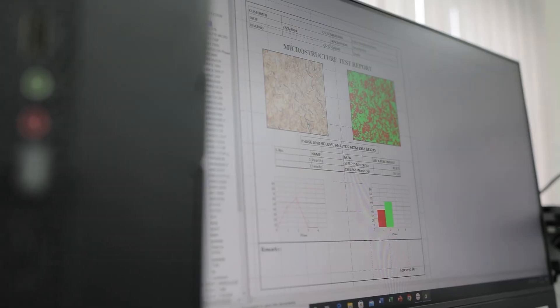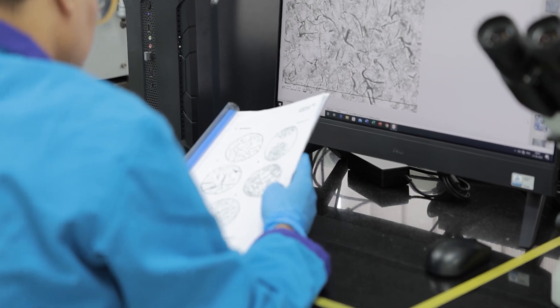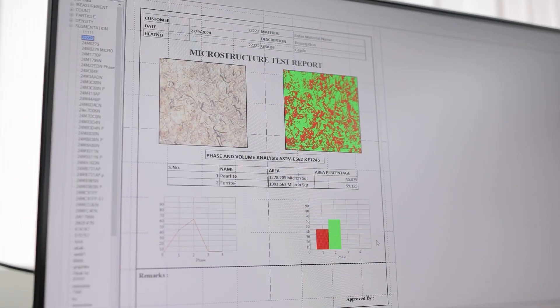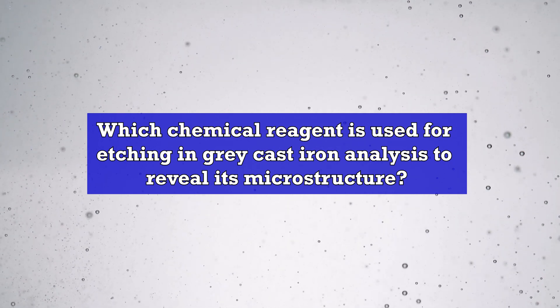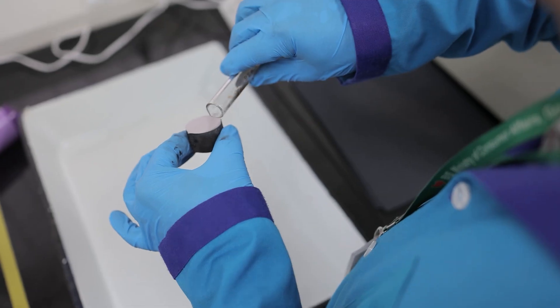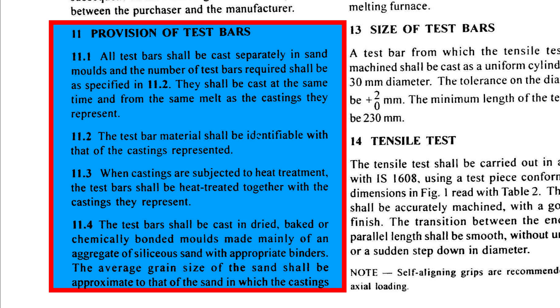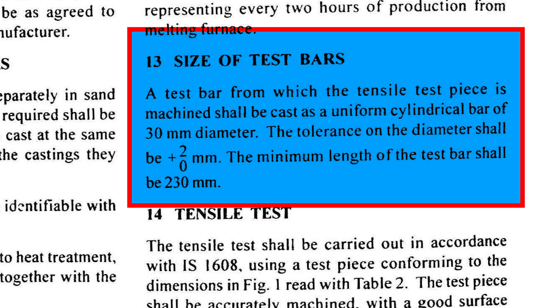The obtained microstructure is then compared with the distribution specified in IS-7754 part 1 2022 to document the distribution of laminar graphite, as required under Clause 9 of IS-210. Which chemical reagent is used for etching in grey cast iron analysis to reveal its microstructure? That would be Nital solution — a mixture of nitric acid and alcohol used to etch metals. Grey cast iron can be molded into any design and size; however, in the testing laboratory, due to space constraints, test bars of size as mentioned in Clause 13 of IS-210 are supplied for carrying out the test.